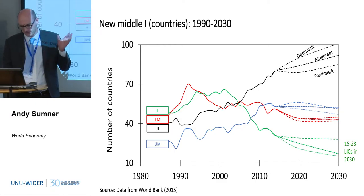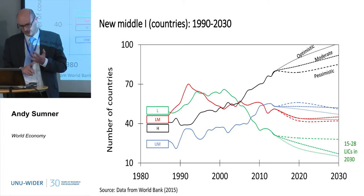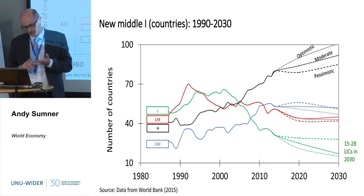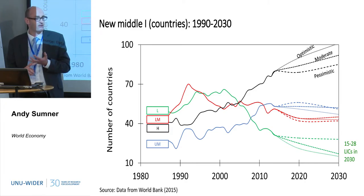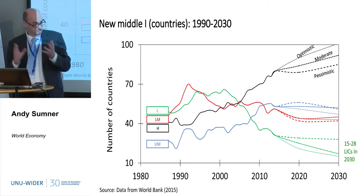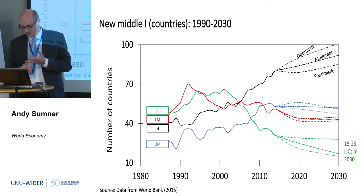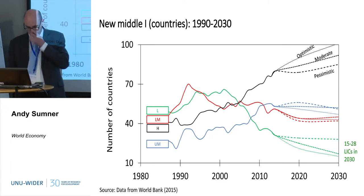The different lines are different scenarios based on the IMF's projections, the IMF's projections minus 1% — which is the historical error — and the optimistic scenario taking them at face value, with the pessimistic at half. Interestingly, the IMF's growth projections also tally with US electoral cycles.